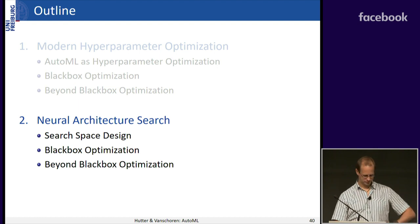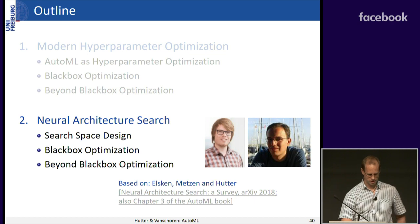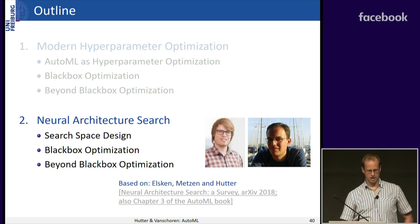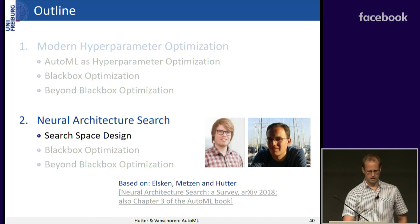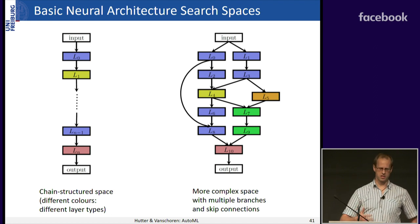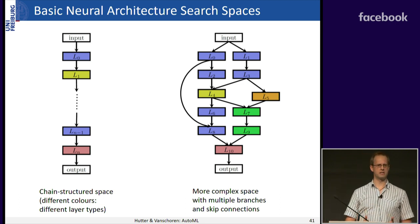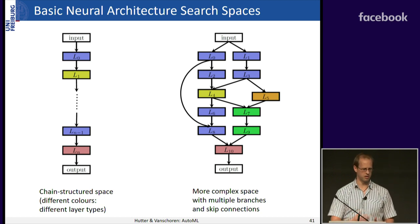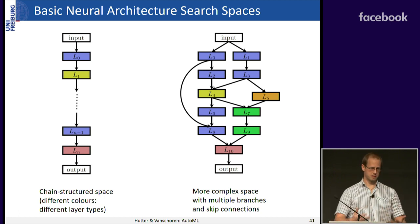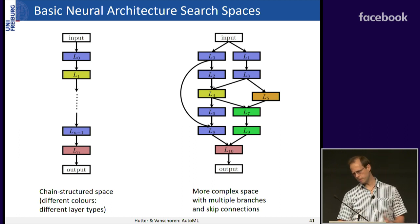The second part is neural architecture search, based on a review article I wrote with my PhD student Thomas Elsken and research scientist Jan Hendrik Metzen at Bosch. The simplest search-based design is a chain-structured space: decide how many layers and what type each layer is — convolutional, max pooling, fully connected, etc. Over time, people moved to more complex spaces with multiple branches and skip connections, inspired by ResNet. Since last year, the standard search space is a cell search space: you parameterize a building block that takes some input and yields some output, then stack these building blocks. Typically two cell types are used: a regular cell and a reduction cell that reduces spatial resolution.